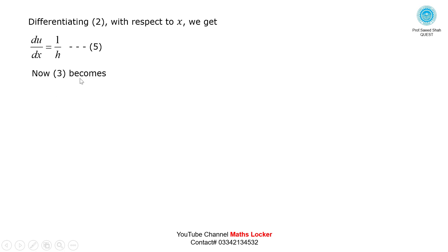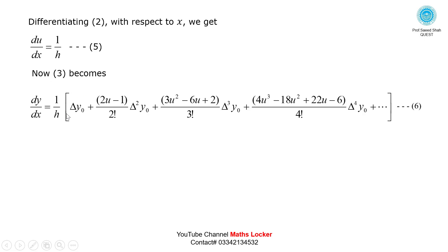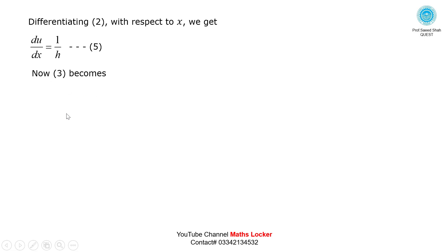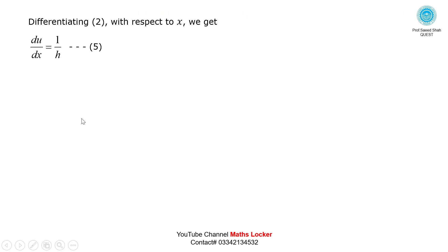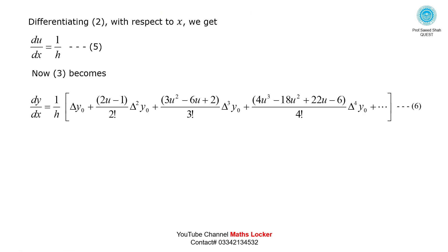Substituting values into equation number 3 (chain rule): in place of dy/du we substitute the differentiated expression, and in place of du/dx we put 1/h. This gives the first derivative formula — equation number 6.